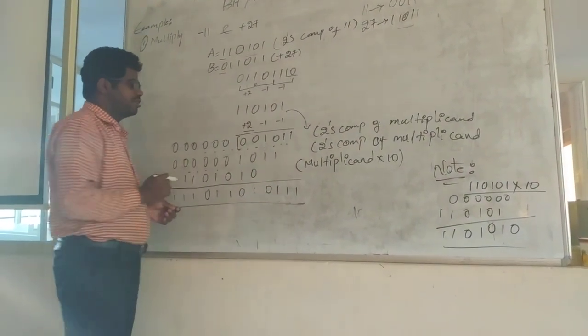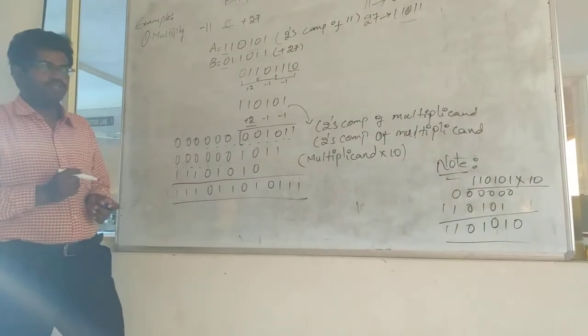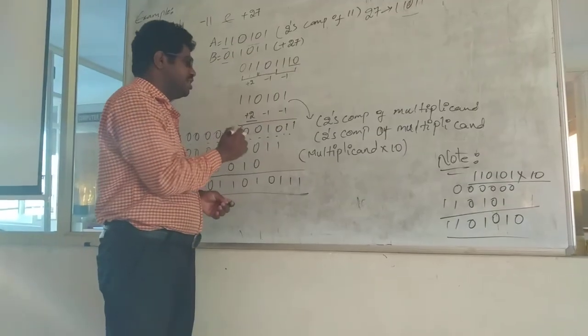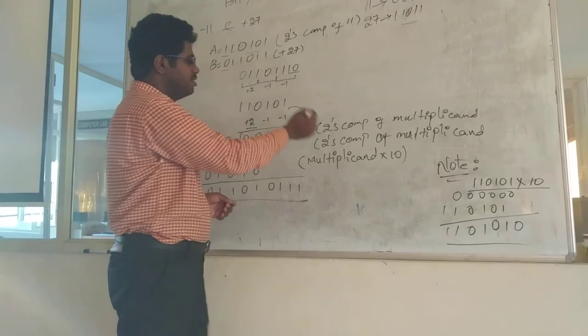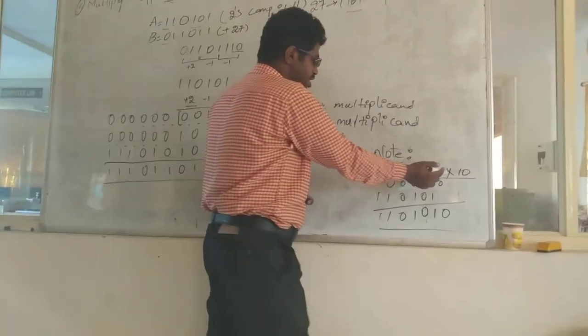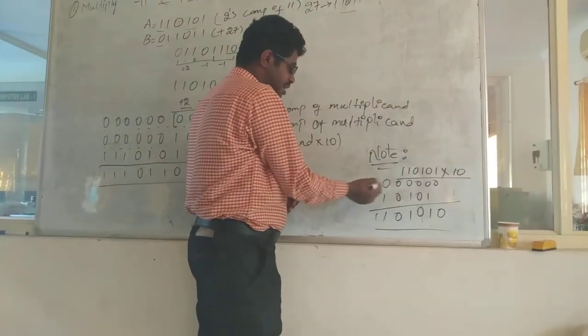So it is a plus 2. Minus 2 means some other matter. Plus 2 means what you can do? The binary equivalent of plus 2 is 10. So what are the multiplicand value? That value 110101 into 10.